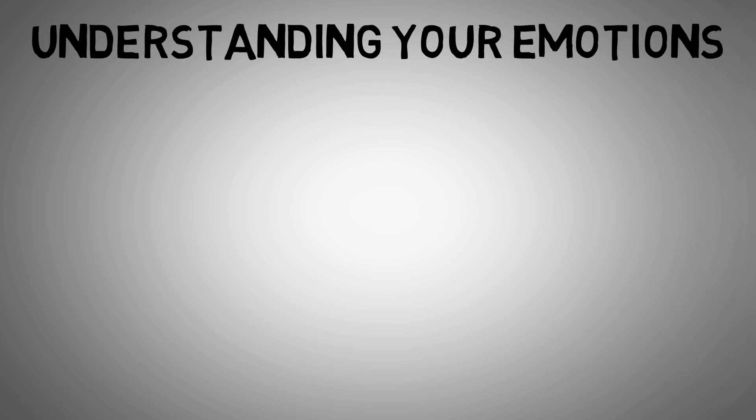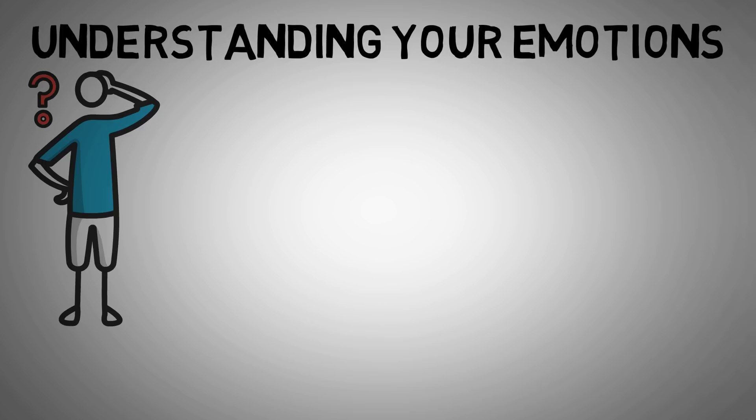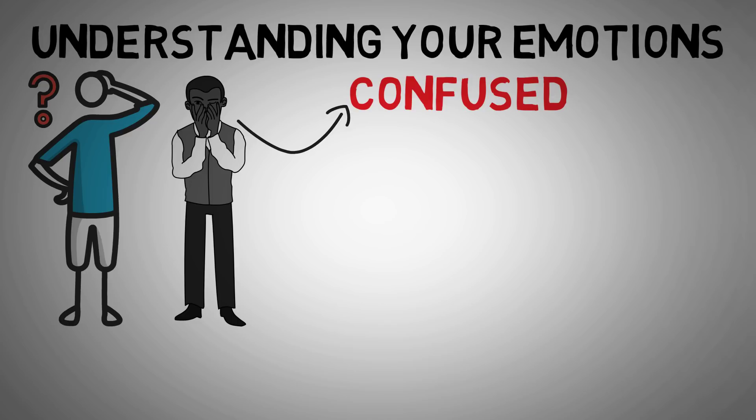This theory assumes that people are in touch with their emotions and the physical responses happening within their body when they experience those emotions. For example, the first time you're experiencing a panic attack, you may not be able to identify what is actually happening within your body. These new sensations, like your chest tightening or your hands tingling, may be confusing to you, yet they are still occurring whether or not you can identify them.